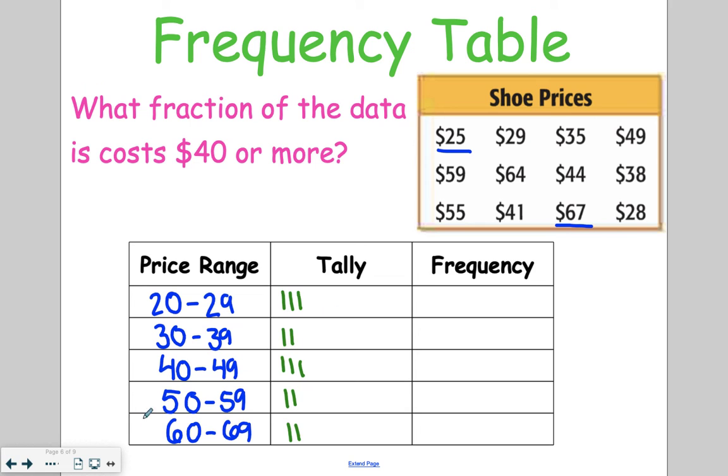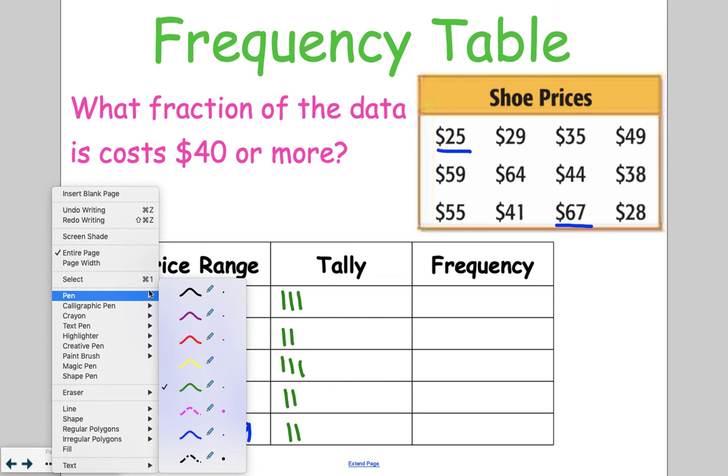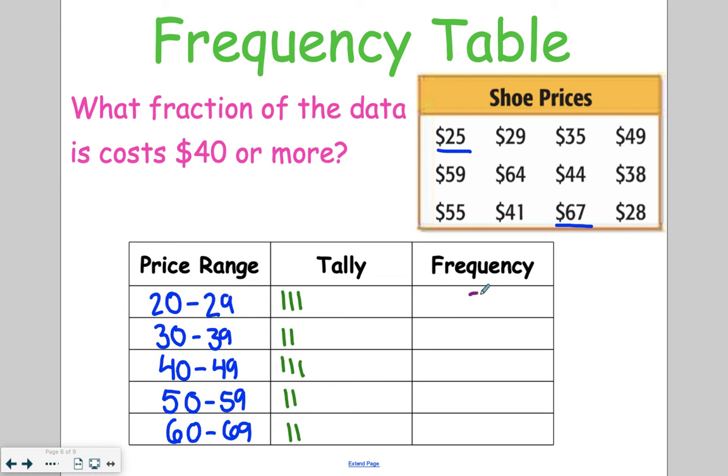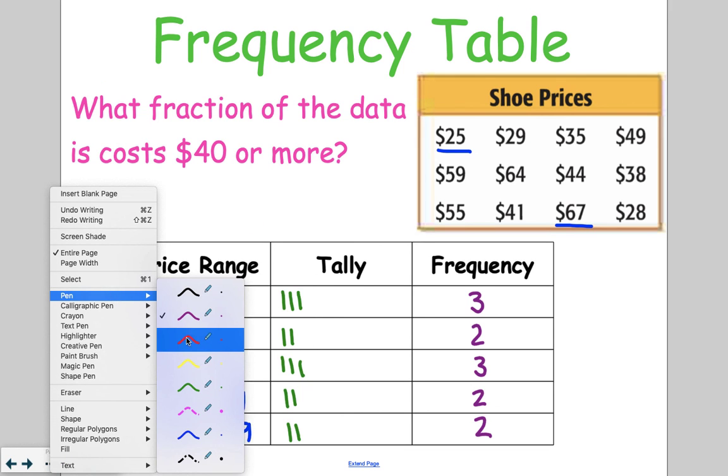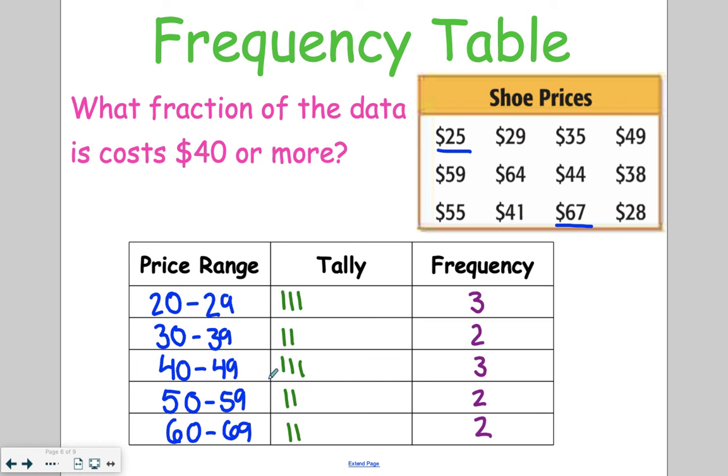Looking at your frequencies then, we have answers of 3, 2, 3, 2, and 2. Now what it asks here is what fraction of the data costs $40 or more. So we're looking for the groups that are $40 or more. In this case, it's the last three groups. So the groups of $40s, $50s, and $60s. So to get my fraction, I've got 3 plus 2 plus 2, which is going to give me 7.